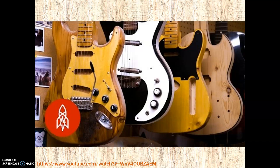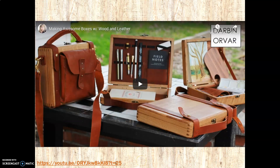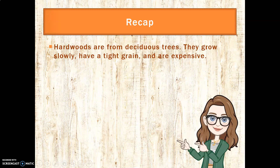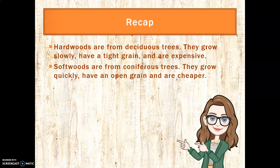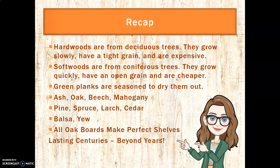There are two videos to round up — one about making guitars from remnants of old pieces of wood, which is really worth a watch, and one from a favourite maker using oak and leather together; if you're interested in woodwork, give it a watch. To recap: hardwoods are from deciduous trees, growing slowly with a tight grain, and are expensive. Softwoods are from coniferous trees, growing quickly with an open grain, and are cheap. Green planks are seasoned to dry them. Our woods are ash, oak, beech, mahogany, pine, spruce, larch, cedar, balsa, and yew. All oak boards make perfect shelves, lasting centuries beyond years. Hope you enjoyed that — see you in class!